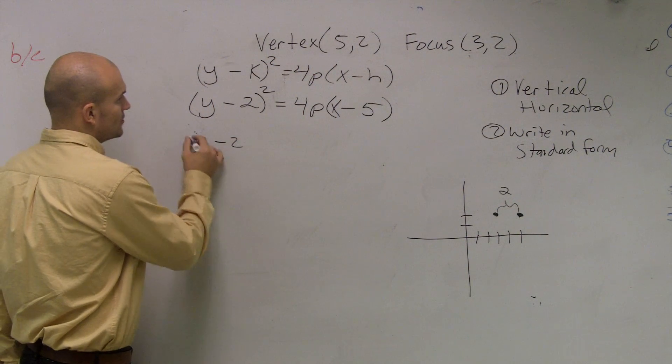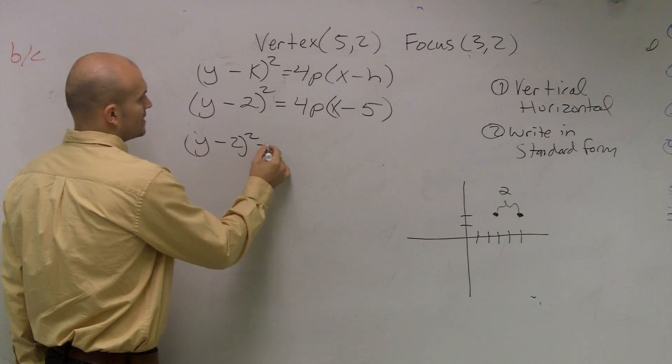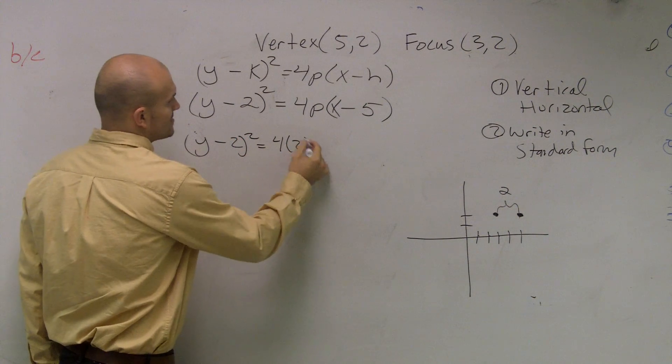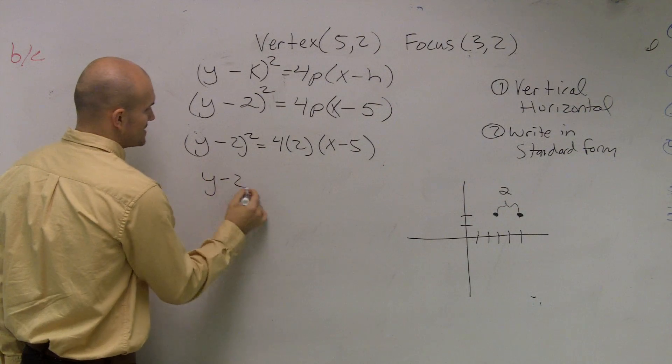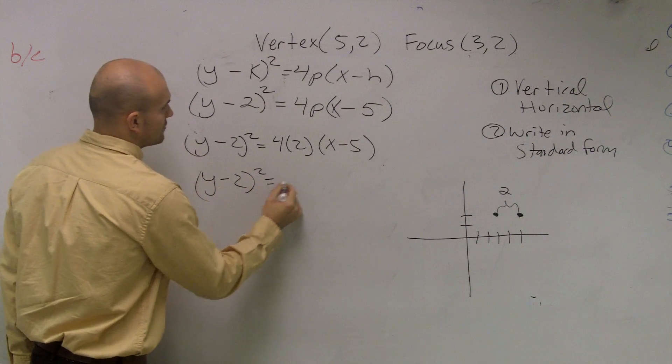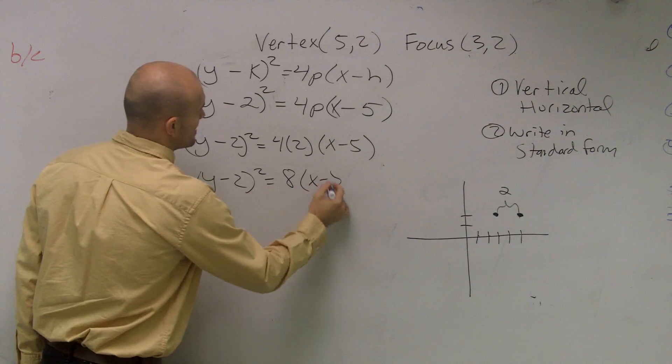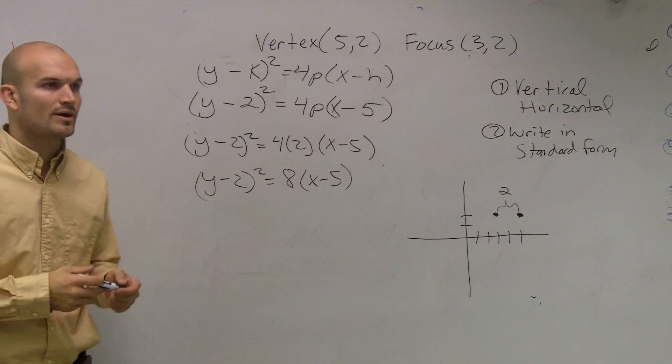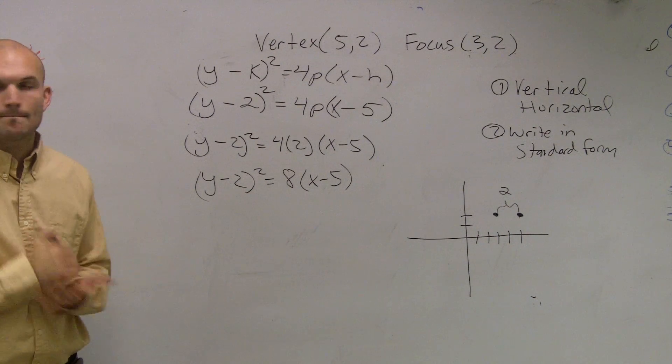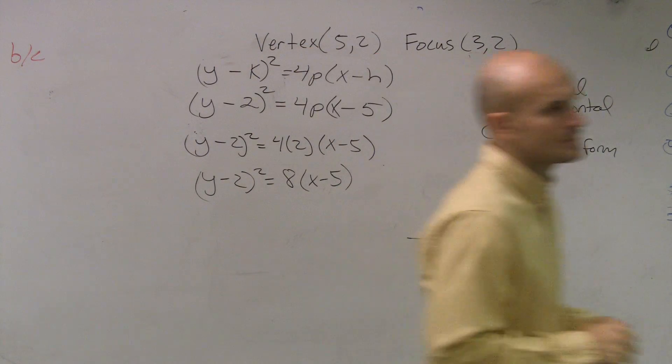So you have y minus 2 squared equals 4 times 2 times x minus 5. y minus 2 squared equals 8 times x minus 5. And that's going to be your standard form of your parabola for any point x and y. That's it. That's all you need to do.